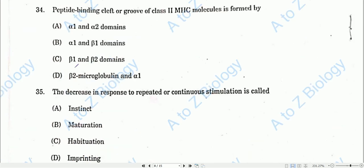Question number thirty-four: The peptide-binding cleft or groove of MHC class II molecule is formed by one alpha and one beta domain — specifically the alpha-1 and beta-1 domains. Option D will be the correct one.